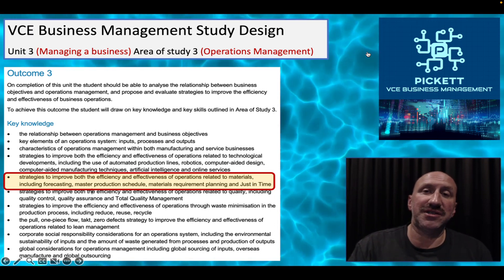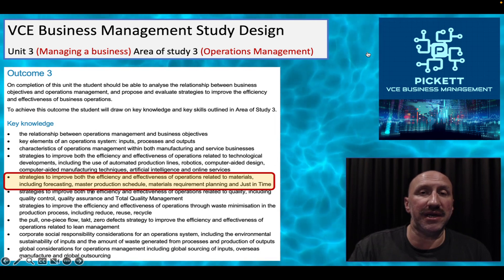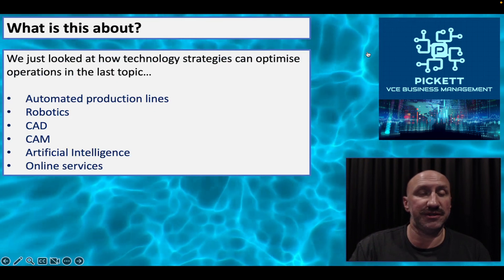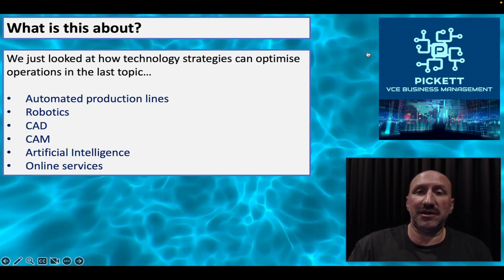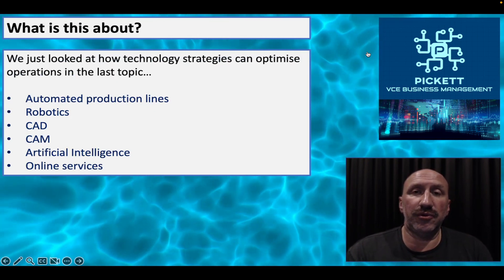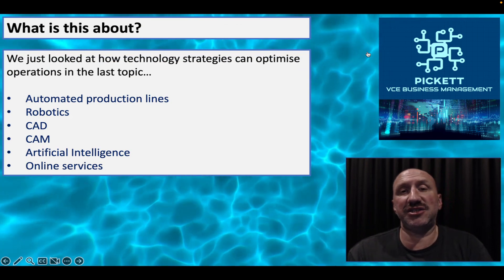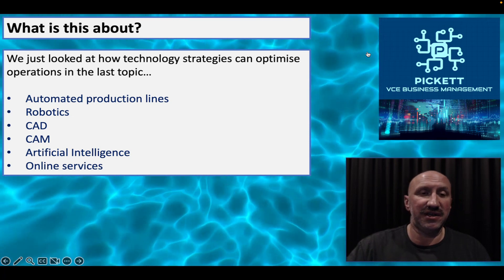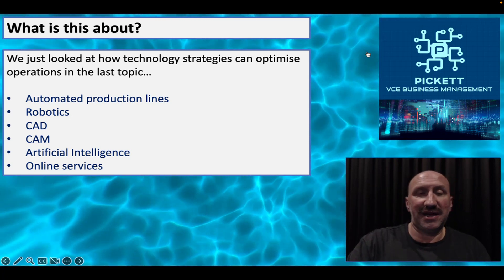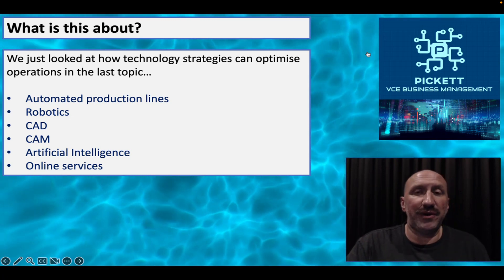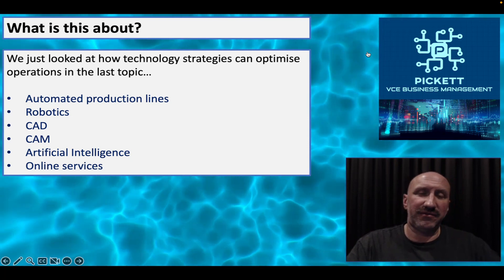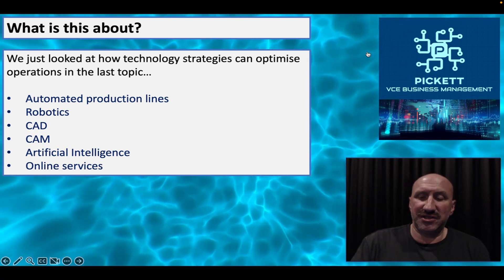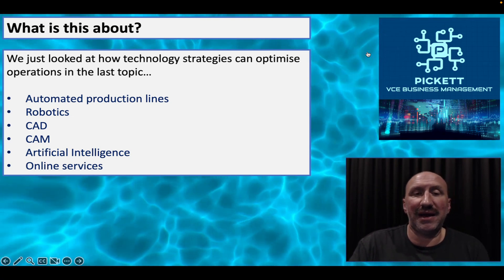Those strategies are the only ones you can be questioned on and the only ones you should use in any responses. In the last video we looked at technology strategies and how they optimize operations in terms of efficiency and effectiveness — those were the six we looked at. Now we're moving on to materials, the second area, looking at four different strategies.